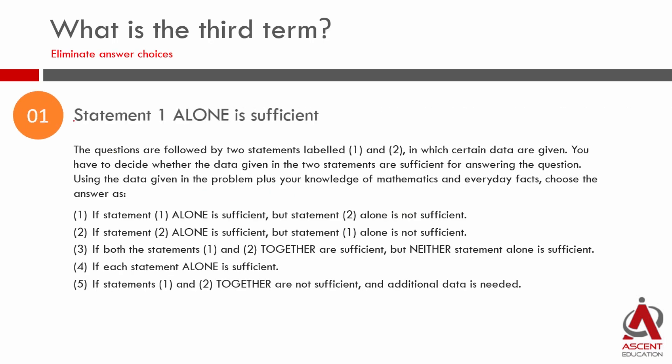Statement 1 sufficient means which answer choice? It could be 1, which is stating that statement 1 alone is sufficient but 2 is not. It could also be 4, where each statement is independently sufficient. Let's eliminate: 2 is not there, 3 is not there, 5 is not there. So our answer choices will be down to 1 and 4.